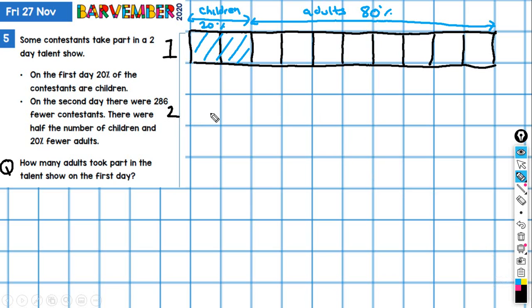What happens on day two? We're told that there were 286 fewer contestants, half the number of children and 20% fewer adults. So we need to work out half the number of children is easy because we can just take one of these blocks. We've already got the children divided into two, so I'm just going to look at the adults.